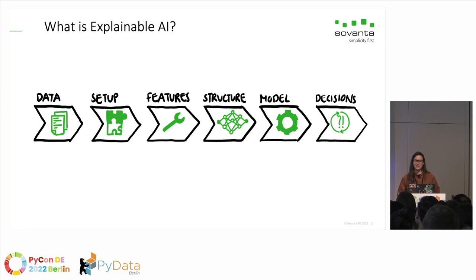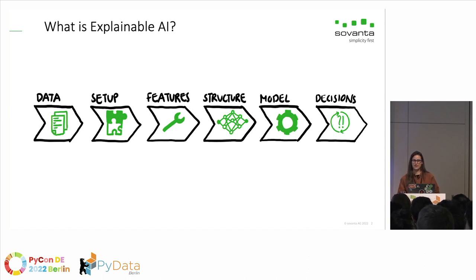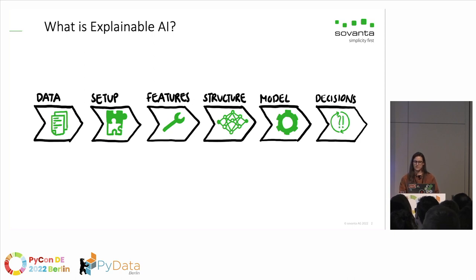Explainable AI refers to processes and methods to understand your AI systems better. The goal is to increase the accuracy of your model, because when you understand your AI systems better you can, for example, discover biases. There was a great talk yesterday about how you can see biases in your data and your AI system by looking into the black box. Another goal is to increase the fairness of your systems.